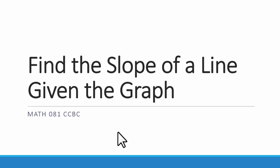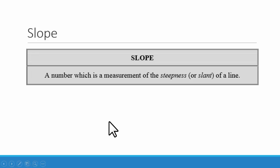In this video we will find the slope of a line given the graph. The slope is a number which is a measure of the steepness or slant of a line.